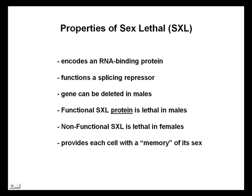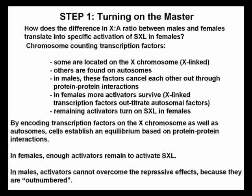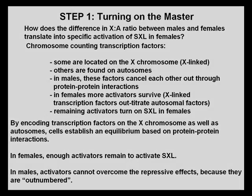SXL provides each cell with a memory of its sex. How does the difference in X:A ratio between males and females translate into specific activation of SXL in females? Chromosome counting transcription factors — some are located on the X chromosome, others are found on the autosome. In males, these factors cancel each other out through protein-protein interactions; the activators cannot overcome the repressive effects because they are outnumbered. In females, enough activators remain to activate sex lethal because there are two X chromosomes, and the X-linked activators out-titrate autosomal factors.